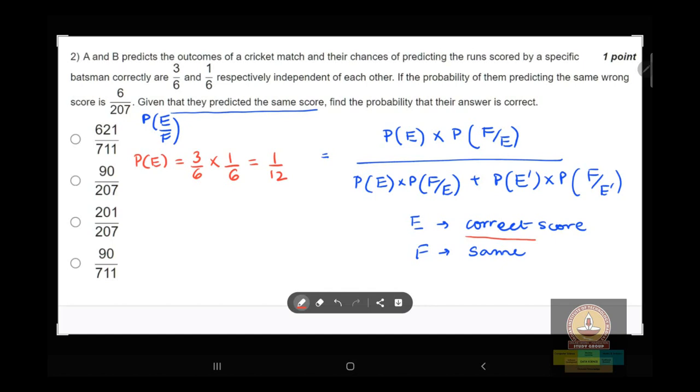It is a basic understanding that if the score is correct, the score would be same. So simply, we can say that P(F|E) would be 1. Like if it is given that E is a correct score, the probability of having the same score is 1, okay.